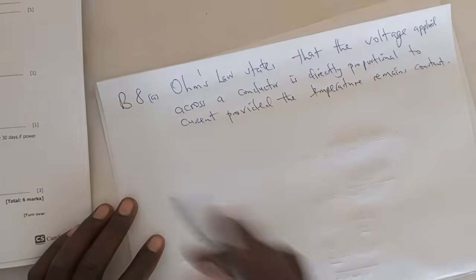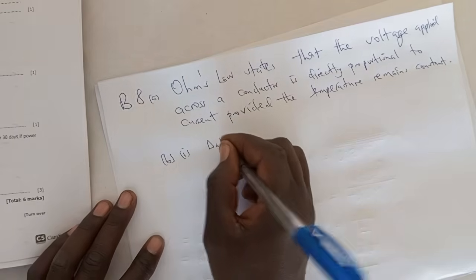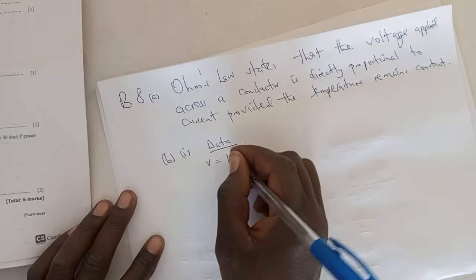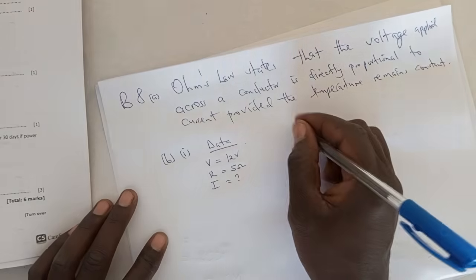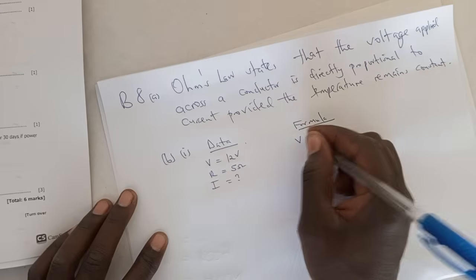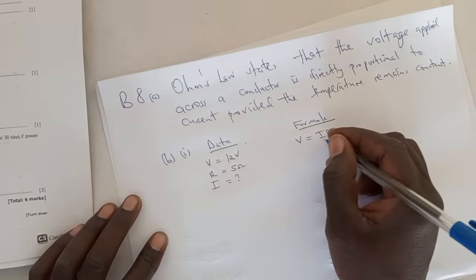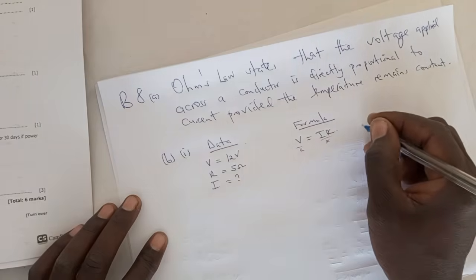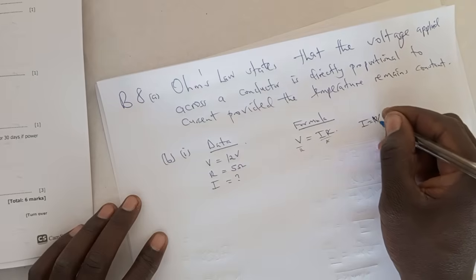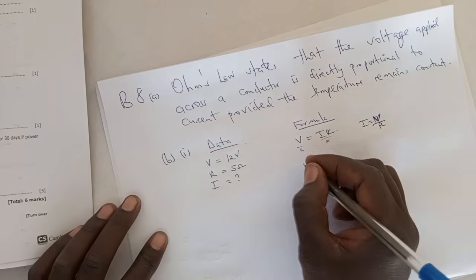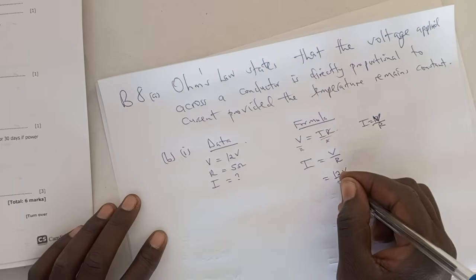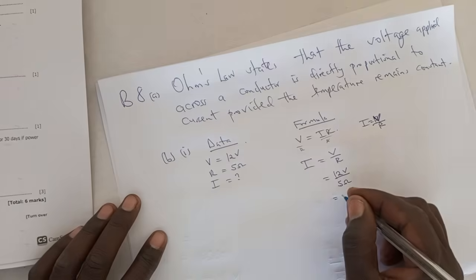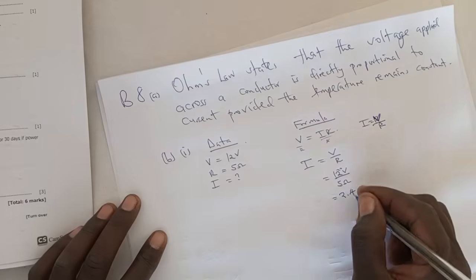Starting with A: from the data we have voltage of 12 volts and resistance of 5 ohms, and current is unknown. Using the formula V = IR from Ohm's Law, making I the subject gives I = V/R. So I = 12 volts divided by 5 ohms. Dividing 12 by 5 gives 2 remainder 2, and 5 into 20 gives 4, so I = 2.4 amps.